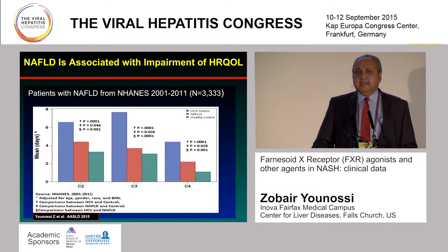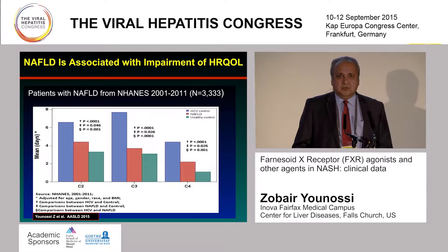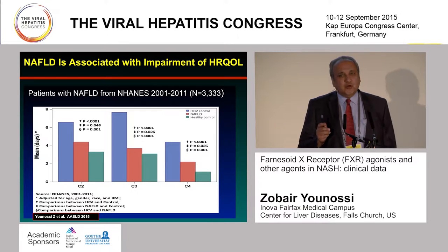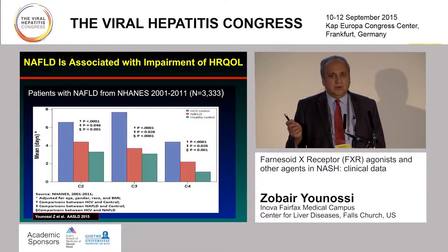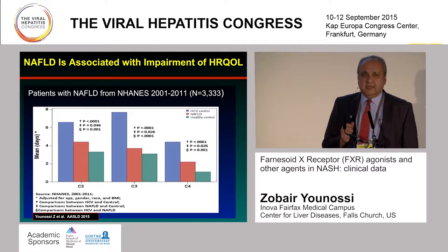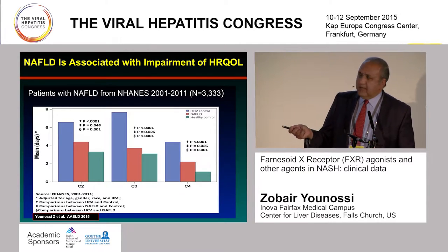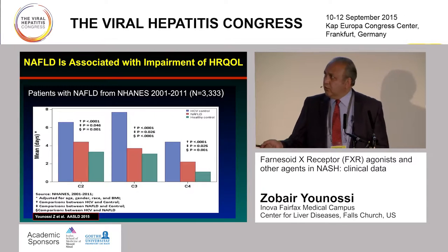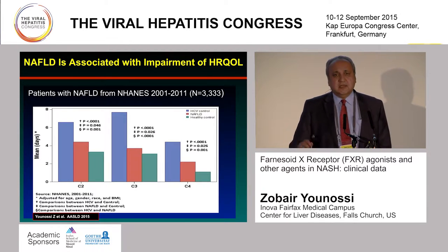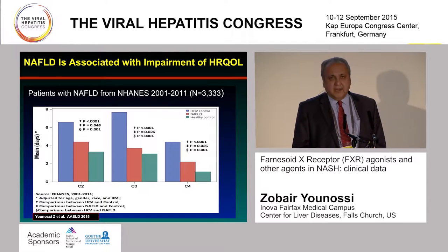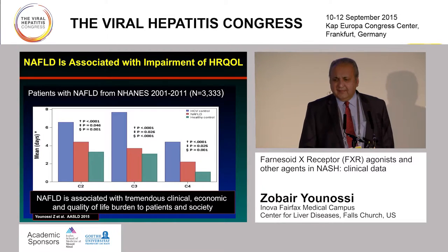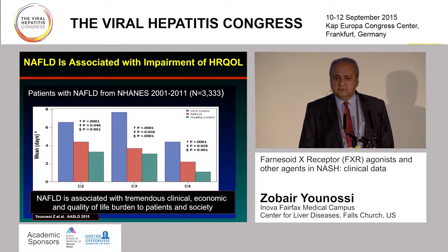The last part of the burden is the quality of life burden associated with non-alcoholic fatty liver disease. When you look at three cohorts — hepatitis C, fatty liver, and healthy controls — from NHANES data including about 3,000 individuals with NAFLD, the worst quality of life was in hepatitis C patients followed by NAFLD, and both were terribly more impaired than the general population age-adjusted. So NAFLD has important clinical, economic, and patient-reported outcome burden.